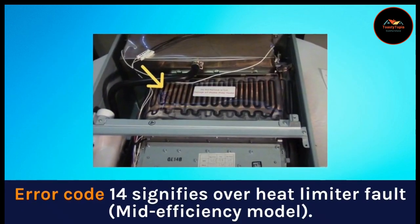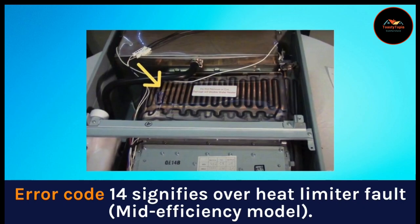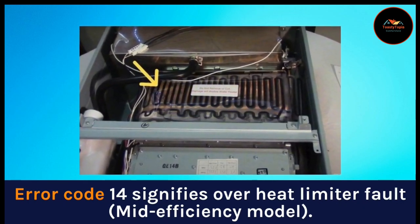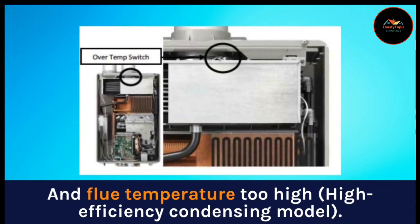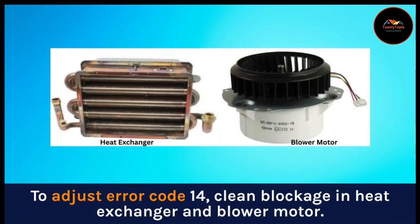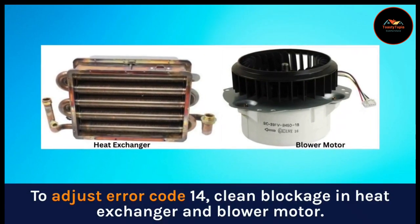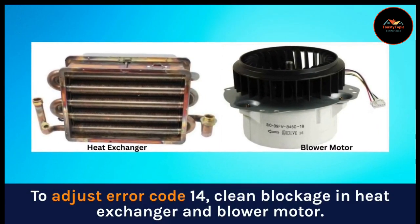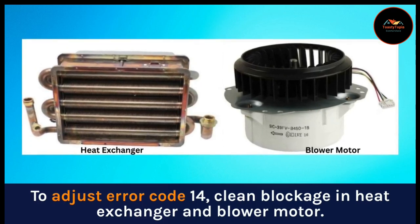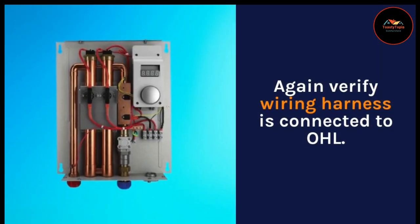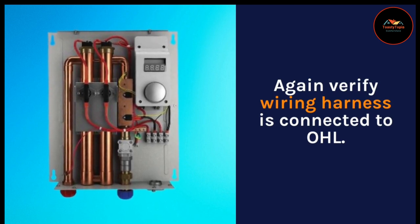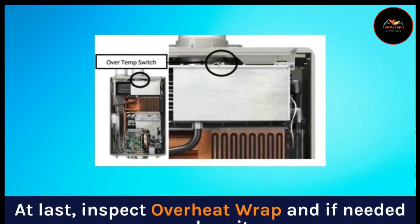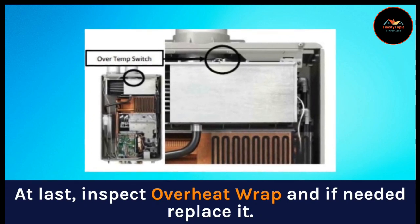Error code 14 signifies overheat limiter fault on the mid-efficiency model, and flue temperature too high on the high-efficiency condensing model. To address error code 14, clean blockages in the heat exchanger and blower motor. Verify the wiring harness is connected to the OHL. Inspect the overheat wrap and replace it if needed.